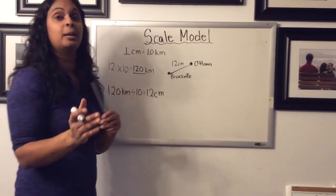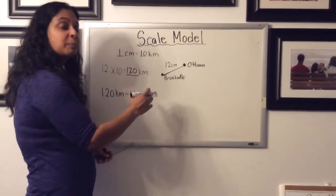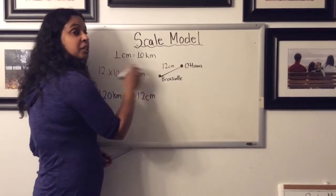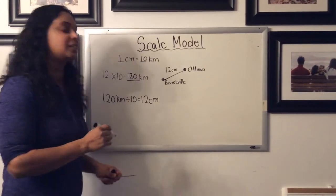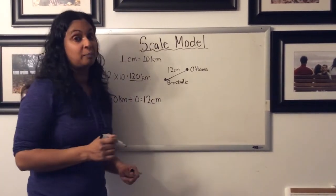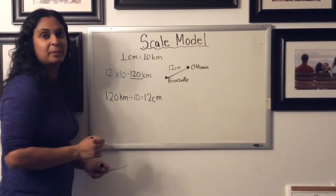So your scale model can work in both ways. For the most part, you'll be measuring and using multiplication, but you may see cases where you have to tell how long to make the line, and then you'd use your fact family and do it backwards.